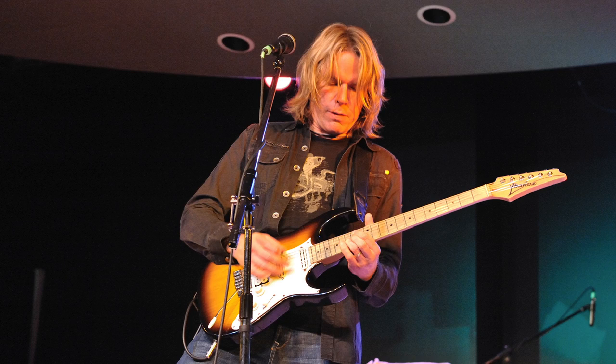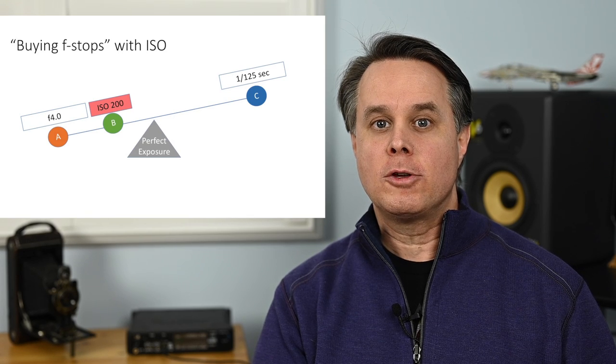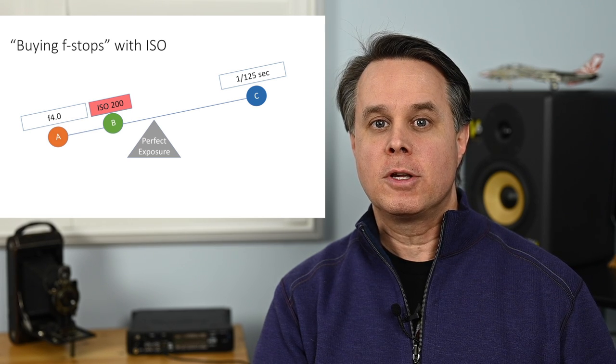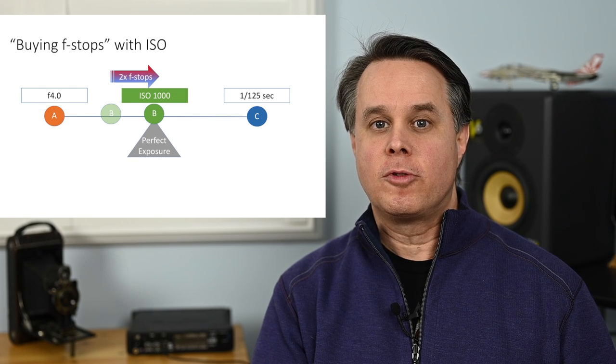With ISO, there are situations where you want to vary it over shutter speed — specifically where you've reached the maximum aperture of your lens and can't bring in more light. Dropping the shutter speed won't help if you're capturing a moving subject like a live stage performance. I call it 'buying f-stops' — for example, when I have an f/4 lens but really need an f/2.8.